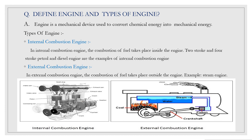There are two types of engine. The first is the internal combustion engine, in which the combustion of fuel takes place inside the engine. The second is the external combustion engine, in which the combustion of fuel takes place outside the engine. An example of an external combustion engine is the steam engine.